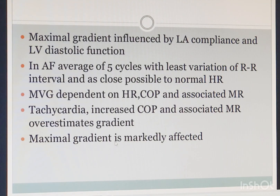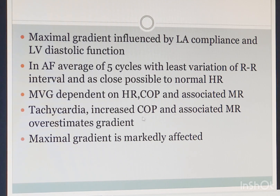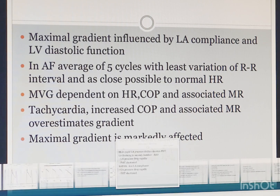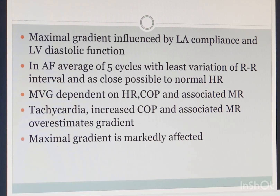Important points: the maximal gradient is influenced by LA compliance and LV diastolic function. In atrial fibrillation with variable RR intervals, we should take at least 10 beats and average the mitral mean gradient. Mean gradient depends on heart rate, cardiac output, and associated MR — tachycardia, increased cardiac output, and associated MR all overestimate the gradient. Because maximal gradient is so markedly affected, almost nobody uses it; we mainly use mean gradient.